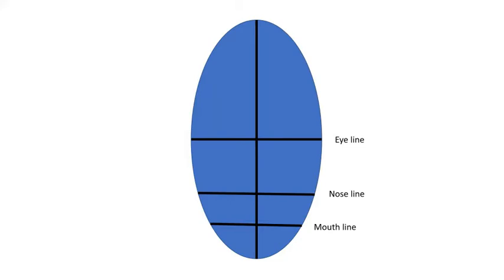And then finally, you've got the mouth line. So the mouth line is again going to be halfway between the nose line and the bottom of your chin. That mouth line is going to be where your lips meet. And then you should have a reasonably good proportion when you're drawing your face. These lines should be really, really light because you're going to then rub them out as you start to draw your features.